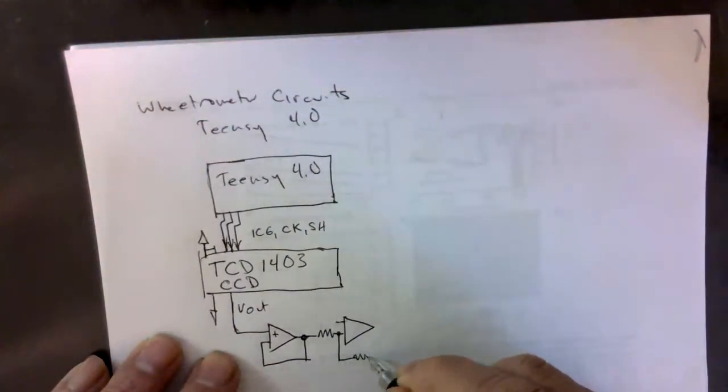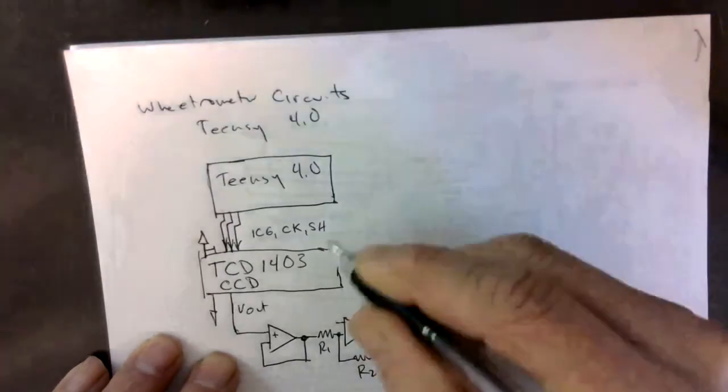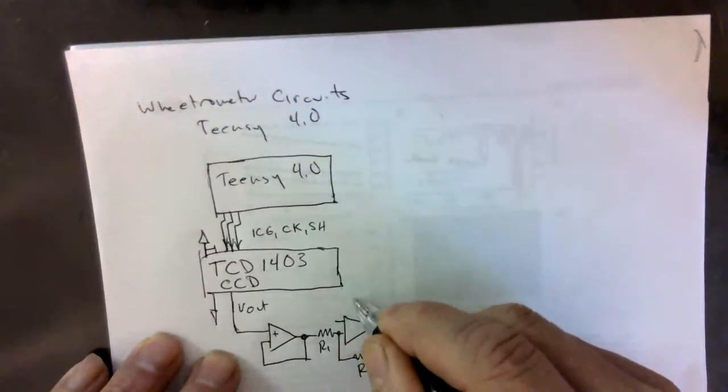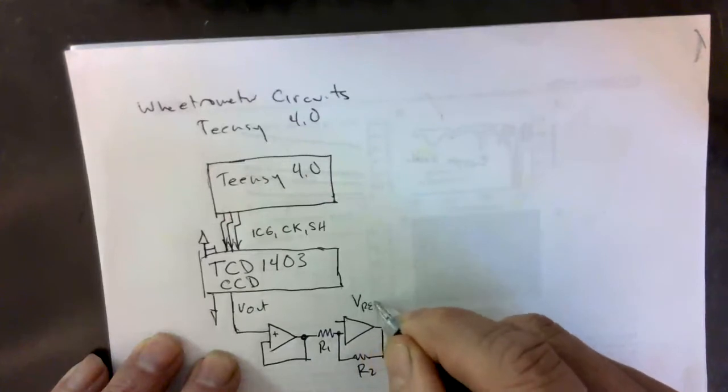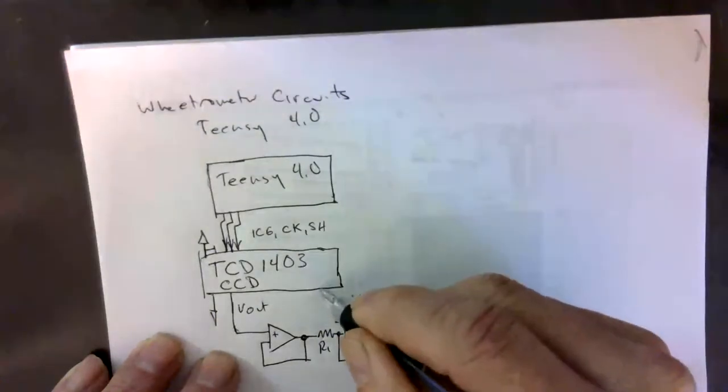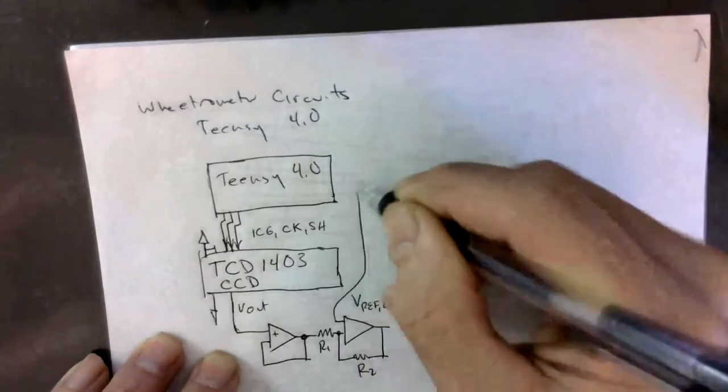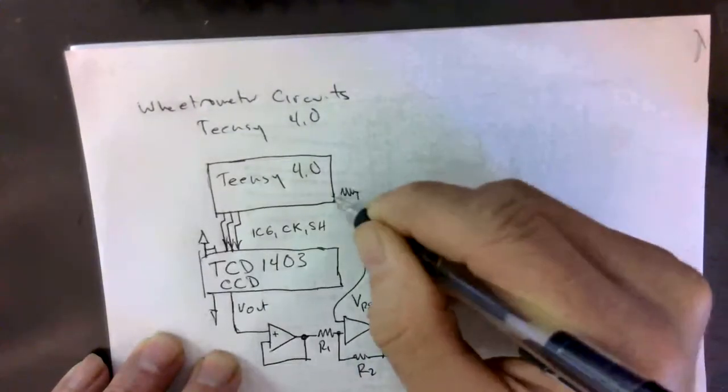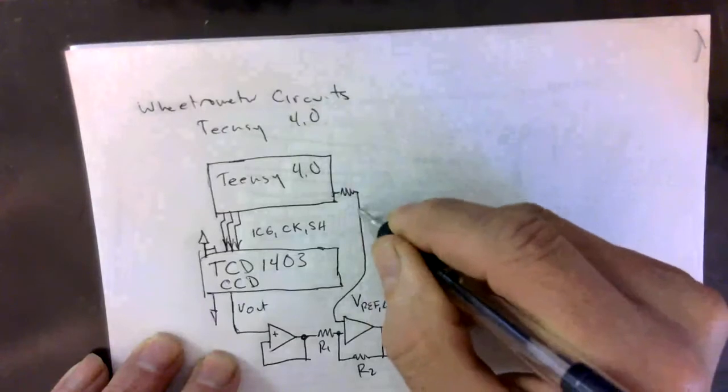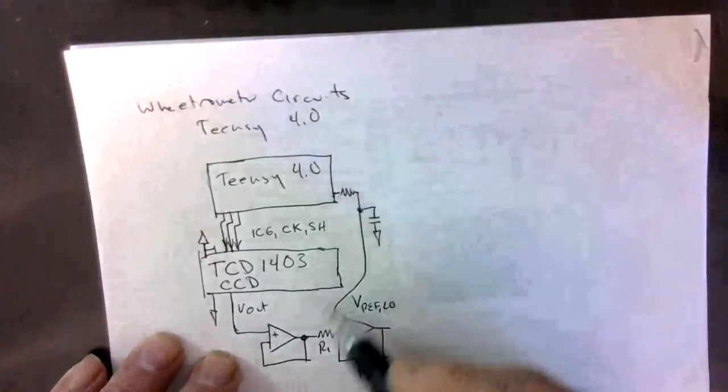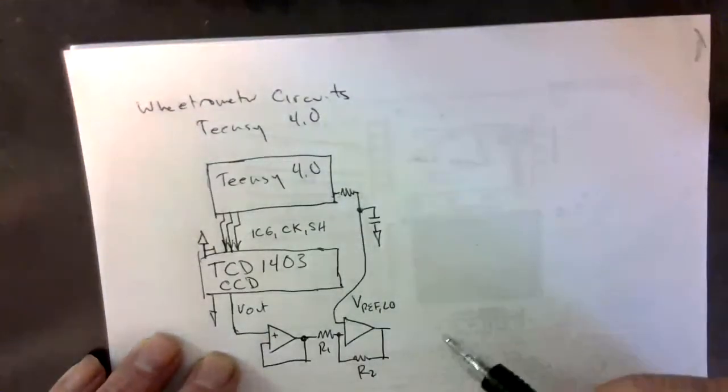We have two resistors in that circuit, R1 and R2. We have a reference voltage, let's call that V ref low, that comes from a PWM output on the Teensy. We have a low pass filter on that, so this is the output that gives us our low reference voltage.